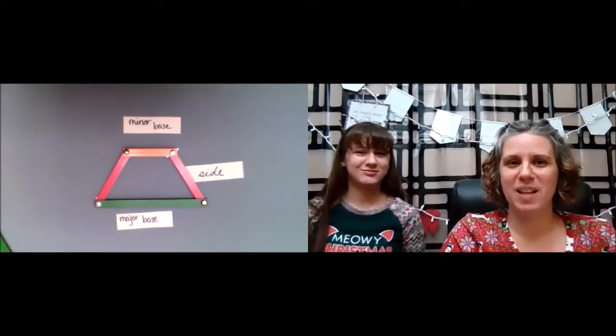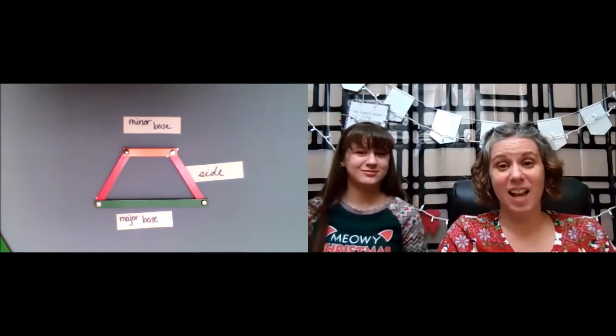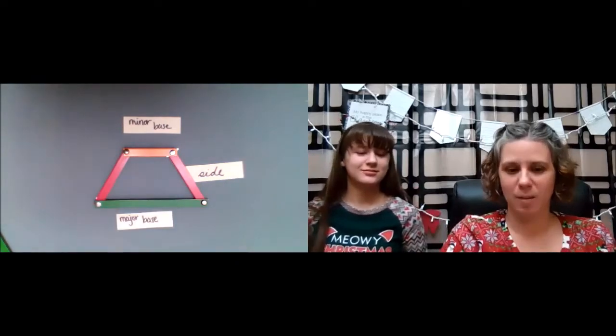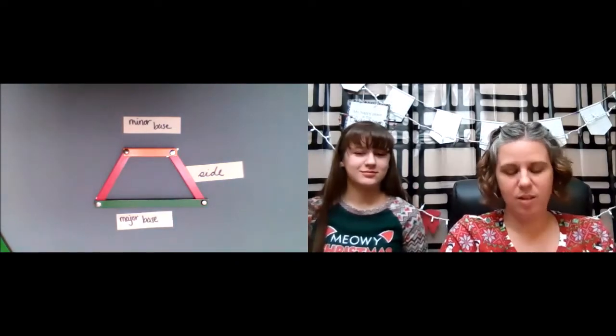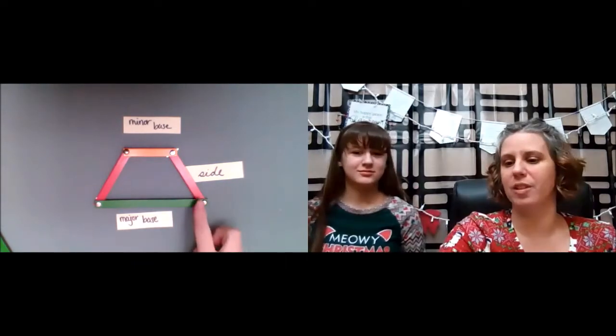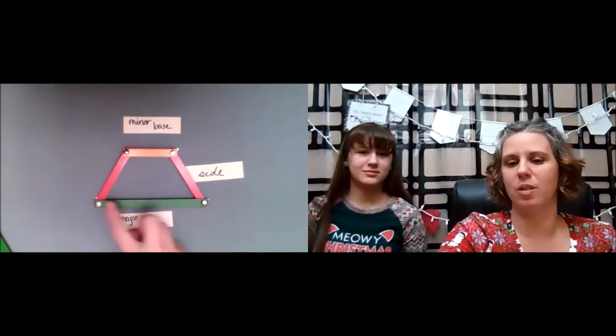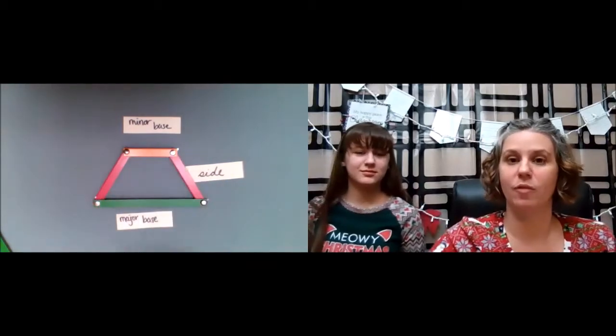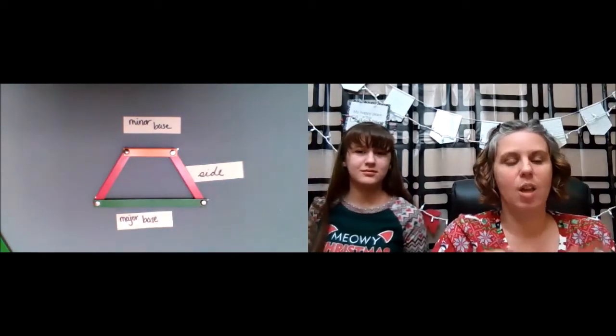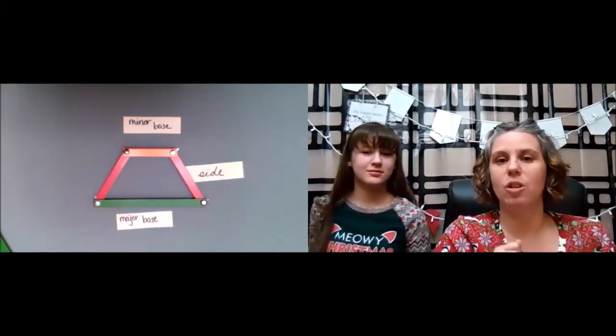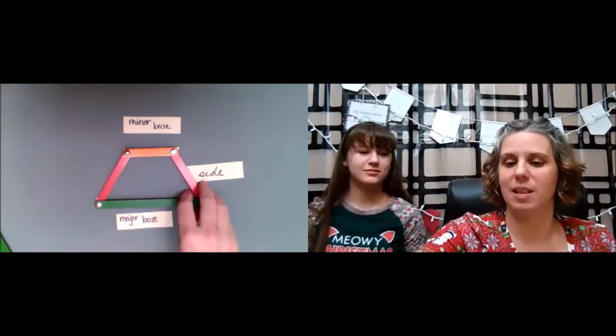Major base, minor base, and a side — and this is another side over here. We could also label the vertex if we wanted to. This one has four vertices.